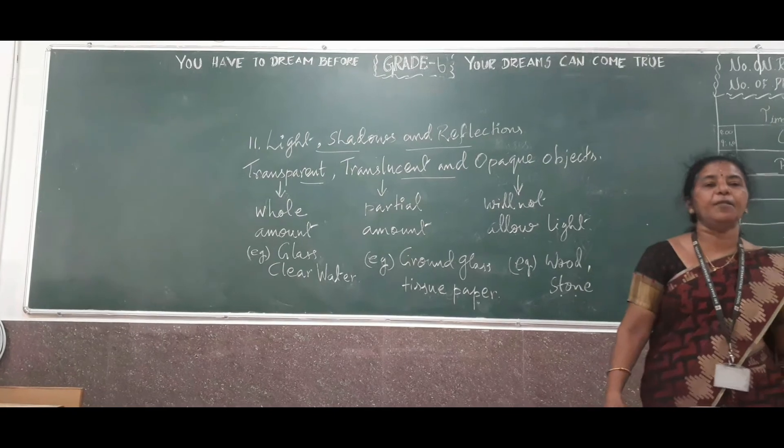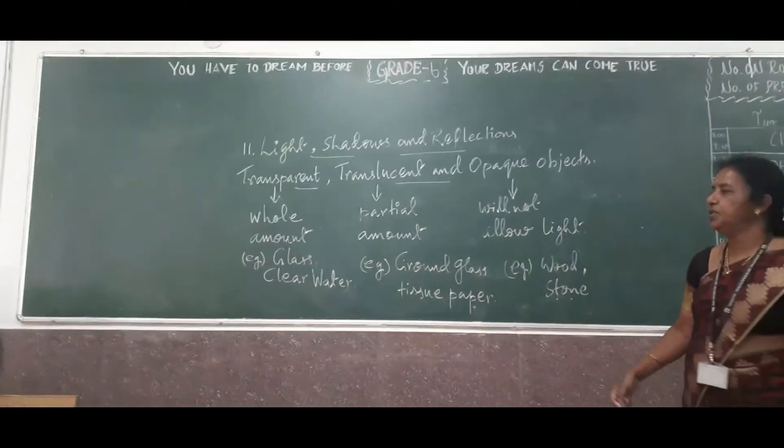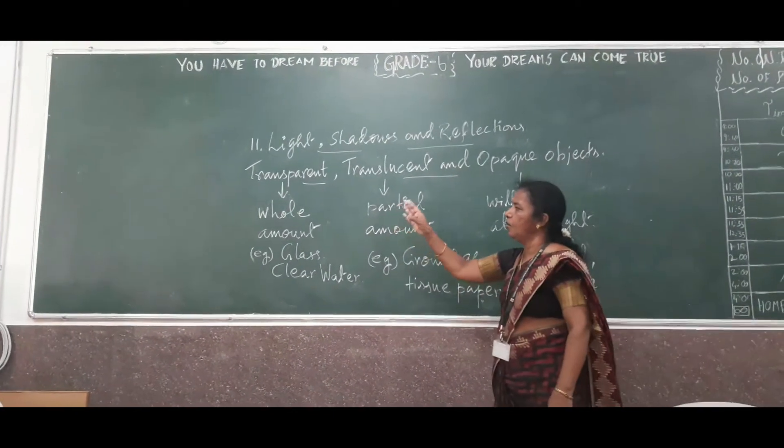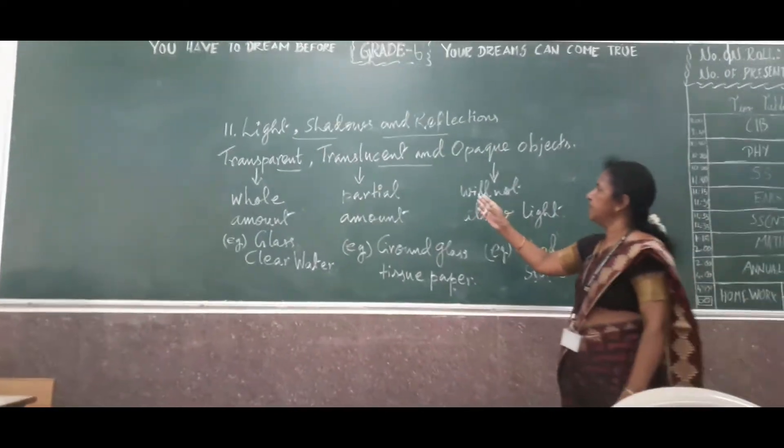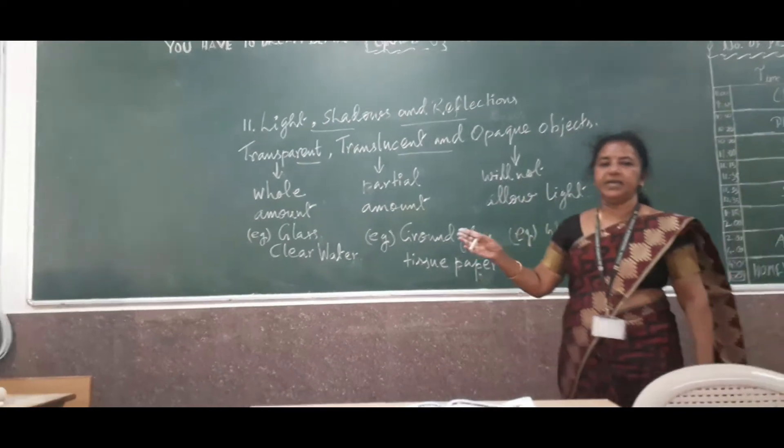So, based on amount of light passing through the different objects, we are classifying all objects into three categories: transparent, translucent, and opaque.